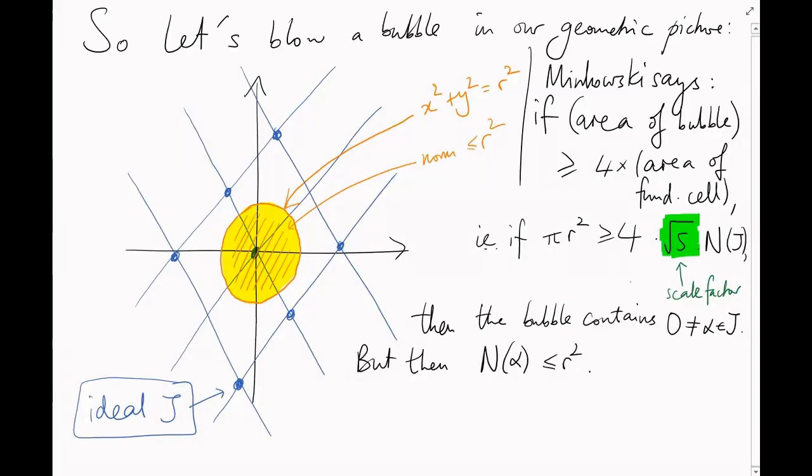But because alpha is inside this bubble, it has norm at most r squared. Putting these facts together and rearranging, that gives us that the norm of alpha divided by the norm of j is at most 4 root 5 over pi, which is about 2.85.